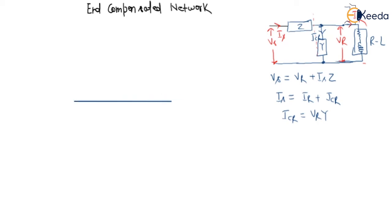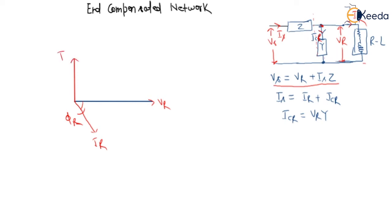To draw the phasor diagram, first we take VR as reference. Since the load is lagging in nature, IR will be lagging at an angle phi. Now we calculate ICR: the voltage applied across Y is VR, and since this is a pure capacitor, ICR will lead VR by 90 degrees. So we draw ICR at 90 degrees leading from VR.